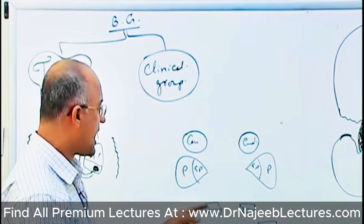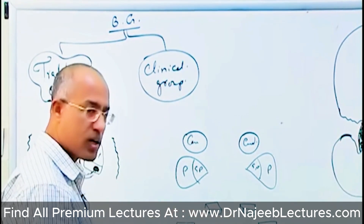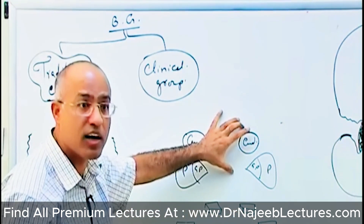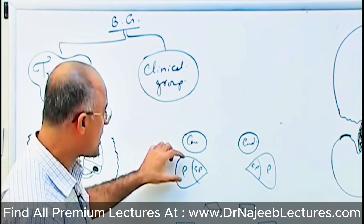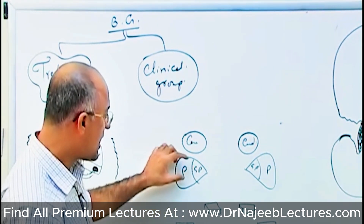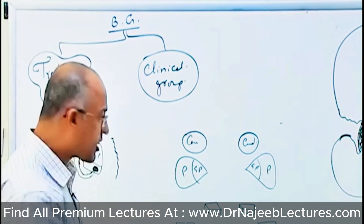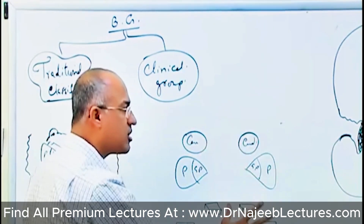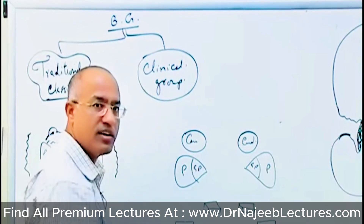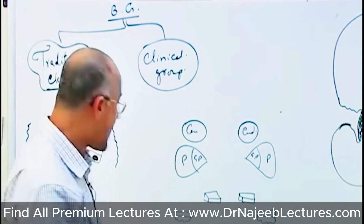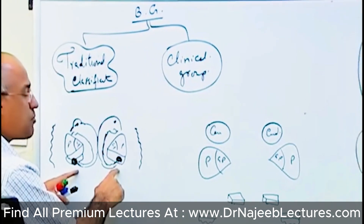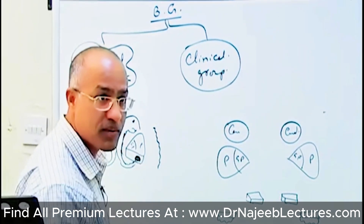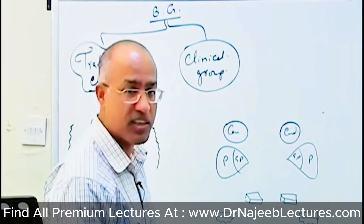Why have we put subthalamic nucleus and substantia nigra with the basal ganglia clinically? Because there are special connections between the lentiform nucleus and subthalamus, and between the lentiform nucleus and substantia nigra — functionally they make one unit with very important connections in between them. So the modern concept is that these structures should be considered basal ganglia and associated nuclei. Claustrum and the amygdaloid body are now studied separately; especially the amygdaloid body is studied with the limbic system, which is concerned with emotions, memory, and other functions.